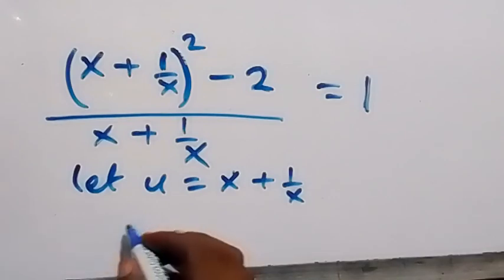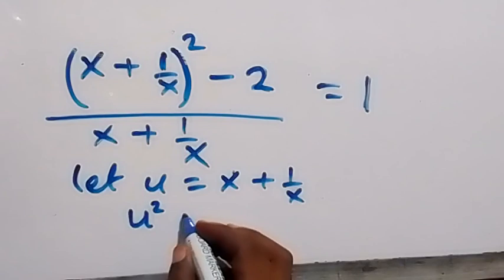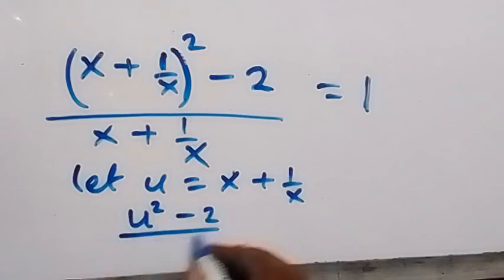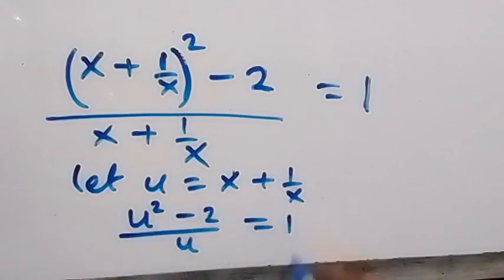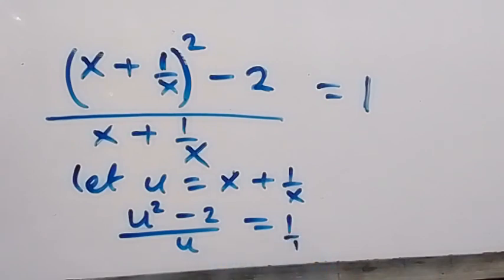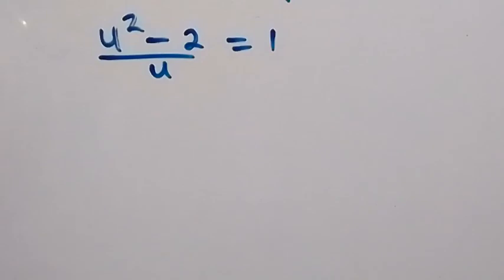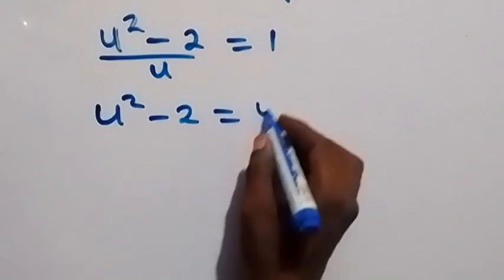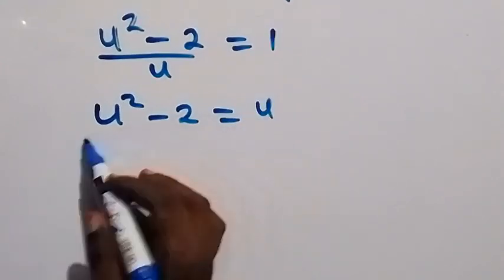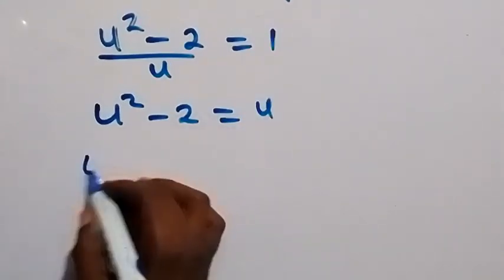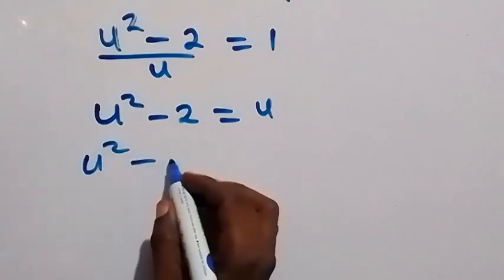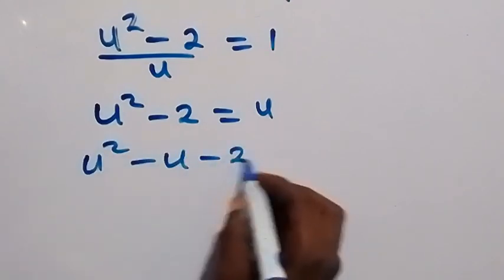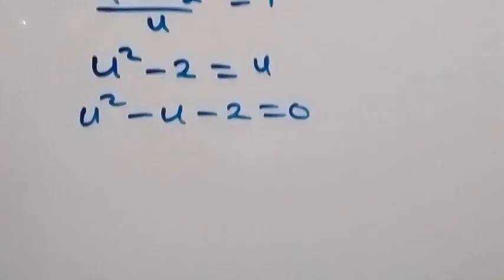This equation becomes u squared minus 2 over u equals to 1. Cross multiplying gives u squared minus 2 equals to u. Taking u to this side forms the quadratic equation u squared minus u minus 2 equals to 0.